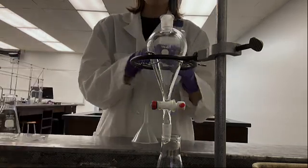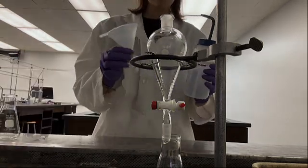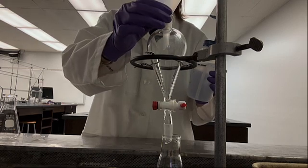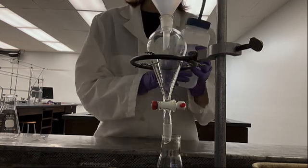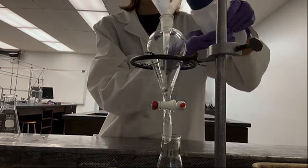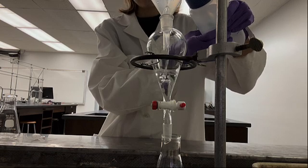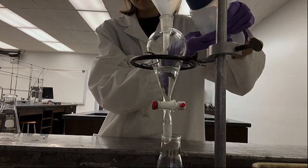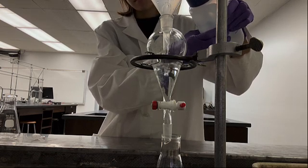Pour the immiscible liquids into the separatory funnel using a plastic funnel. I used a squeeze bottle to directly pour it into the funnel for the tutorial. I tried filling it high enough for you to see the two separate layers once I add in the diethyl ether.